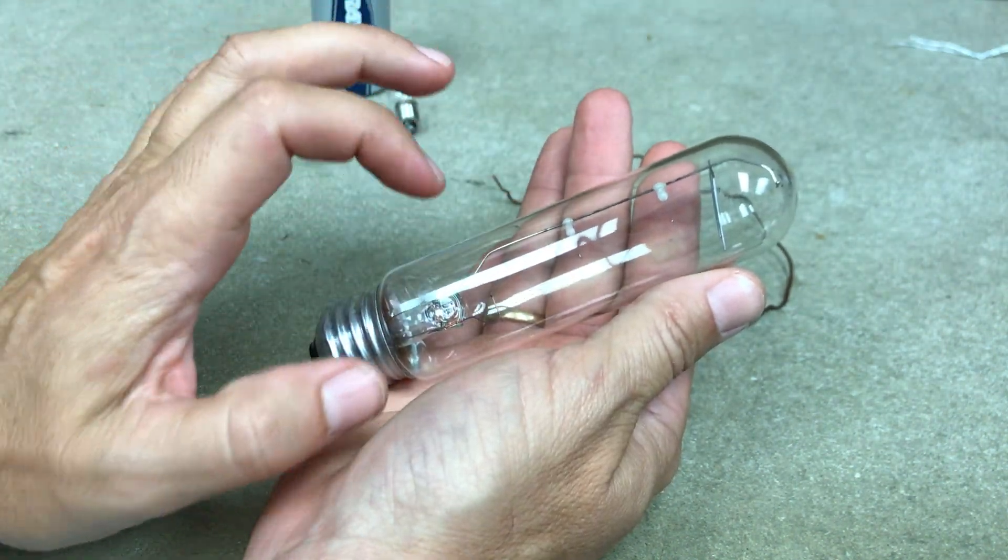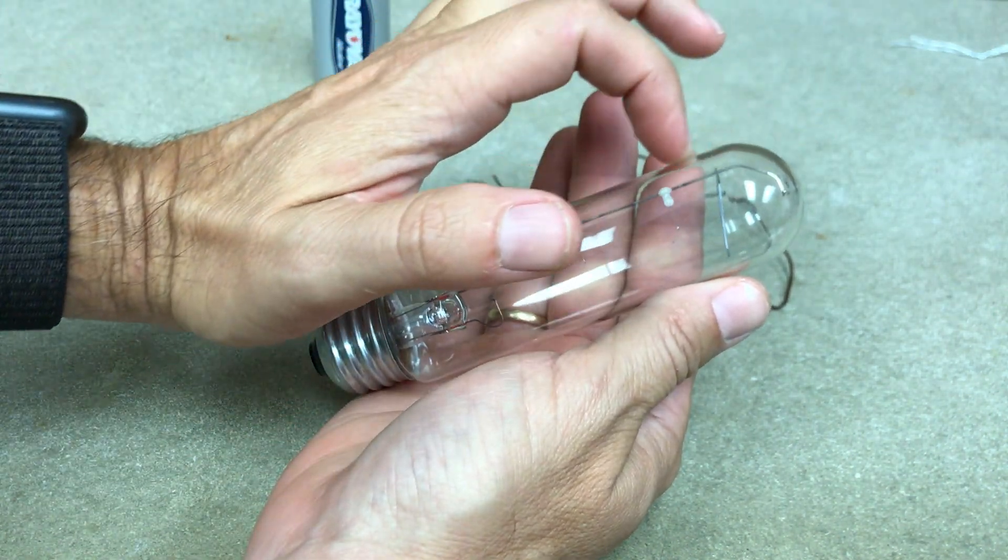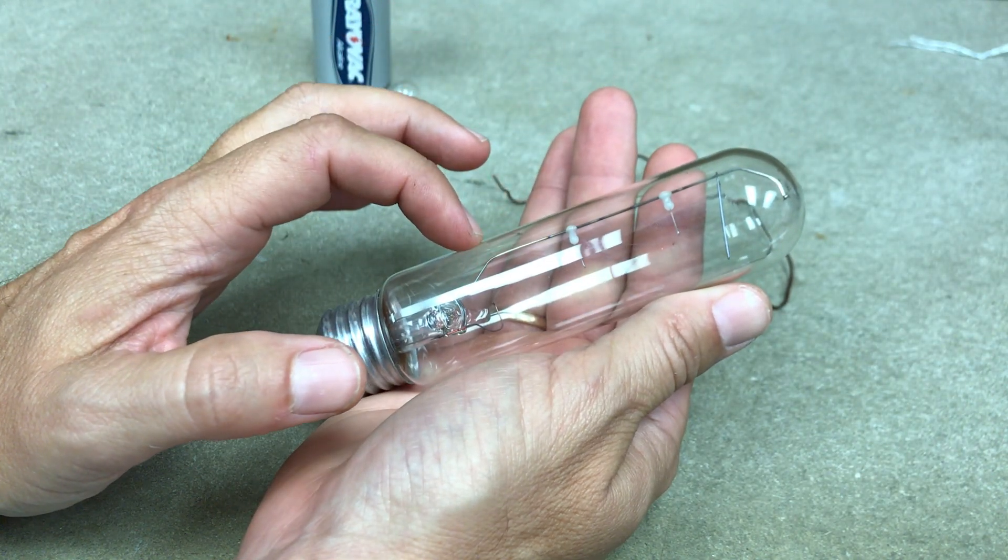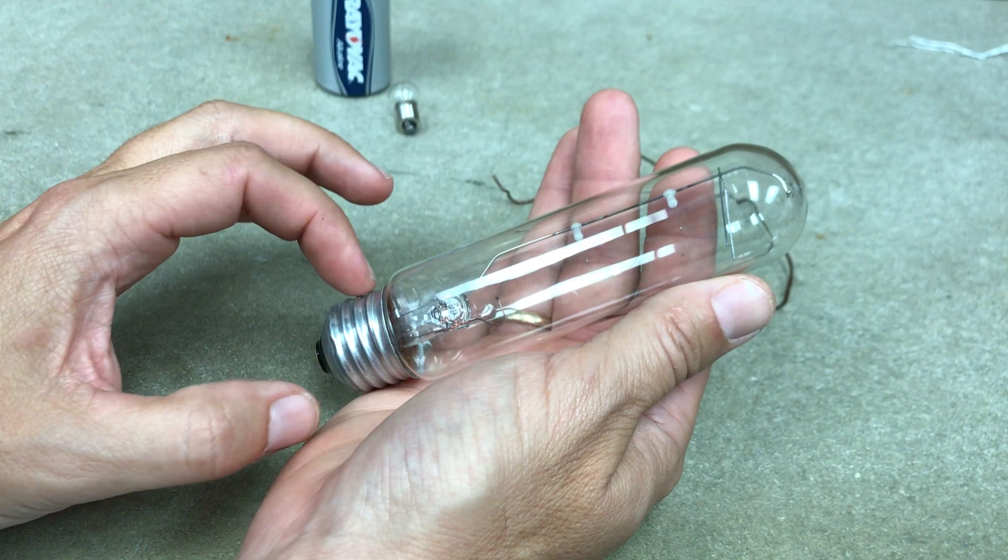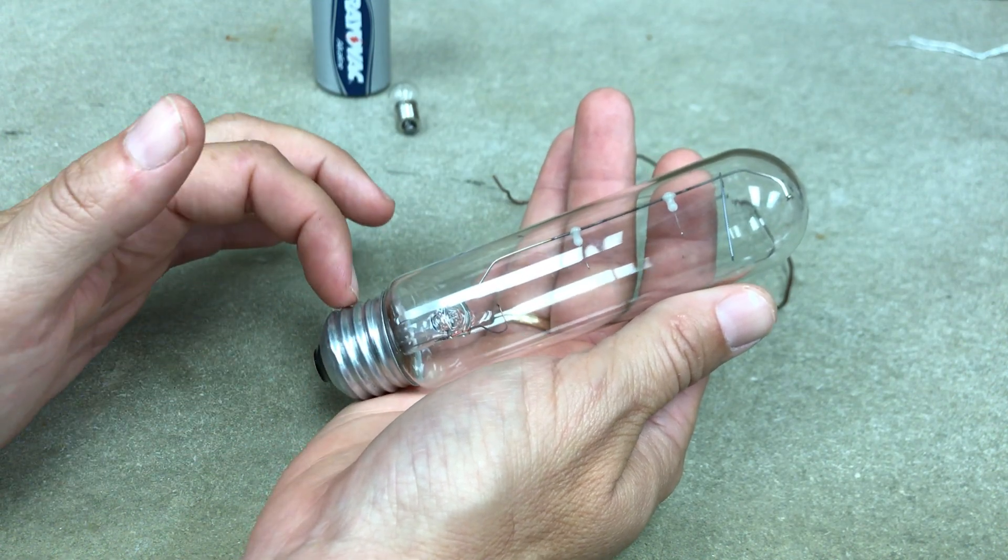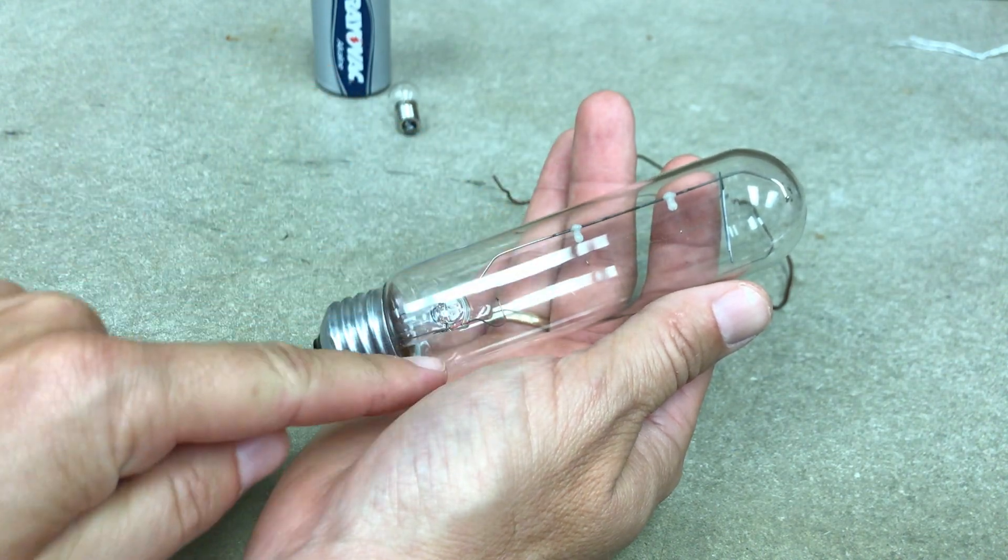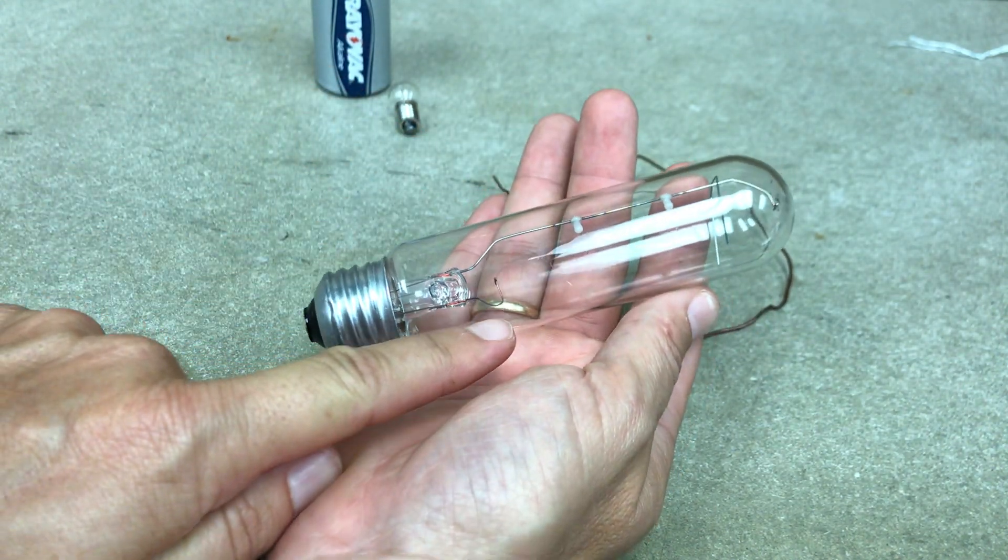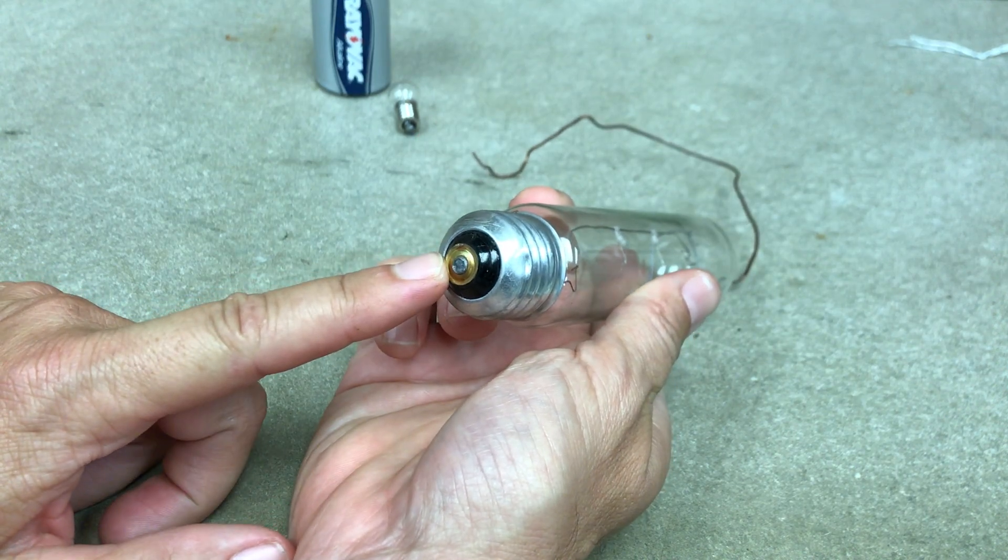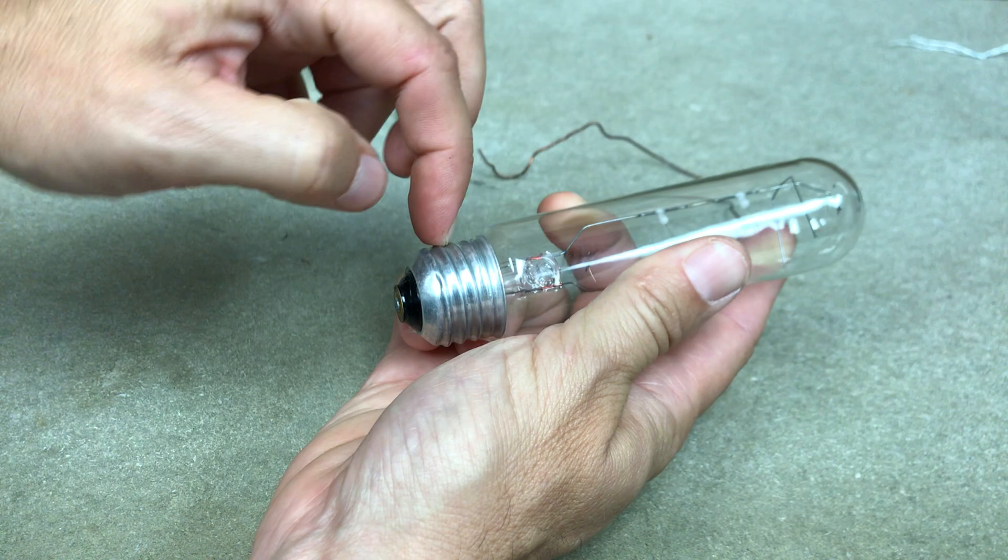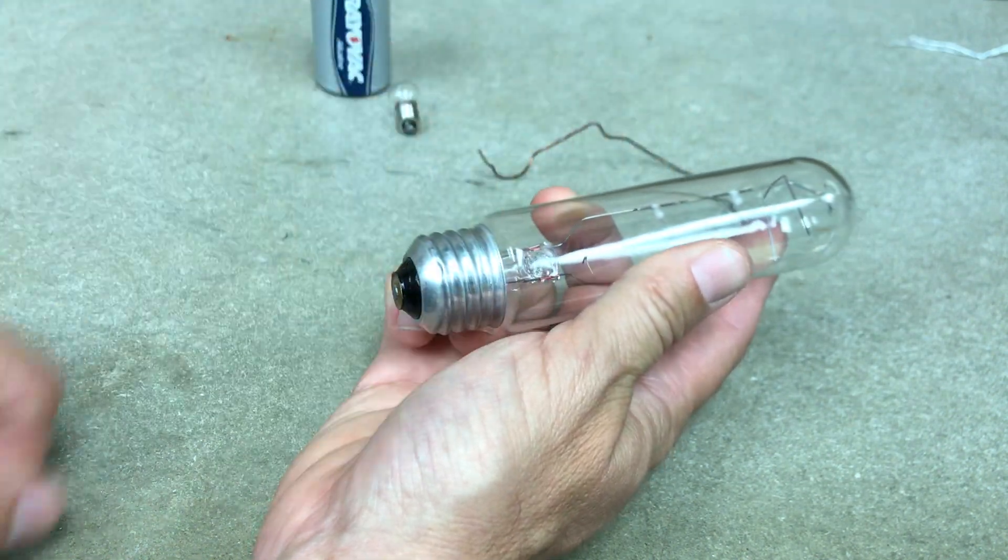So in this, and this is an incandescent light, this filament post right here, there's a metal wire that holds up the filament and that wire comes down here and it connects to the side metal part right here. The other end of the filament comes down here and connects to this other post and that connects down here to the bottom. So if I connect a battery to these two points, it's the same as connecting the battery to the wire and it glows.